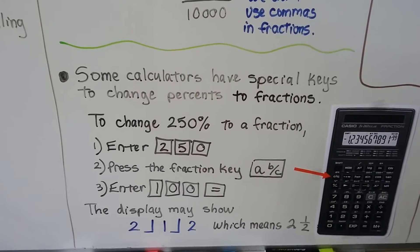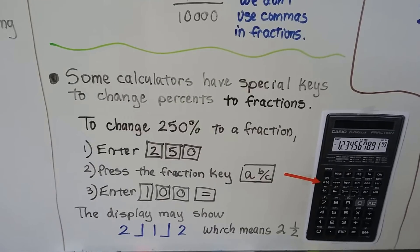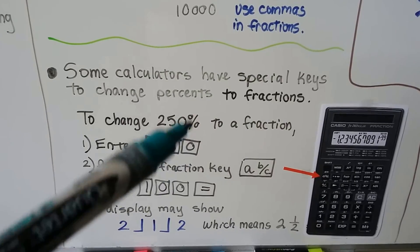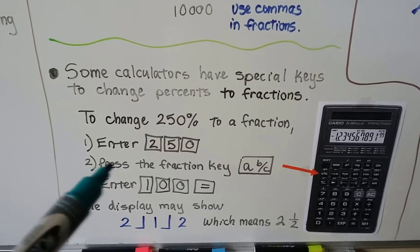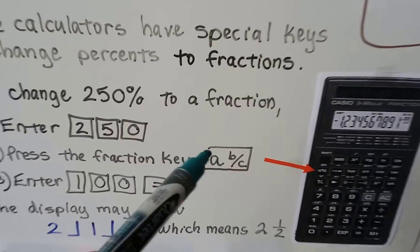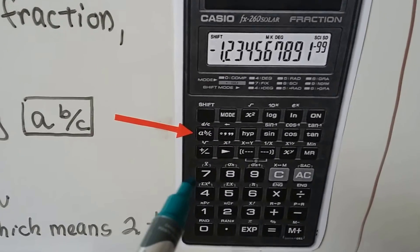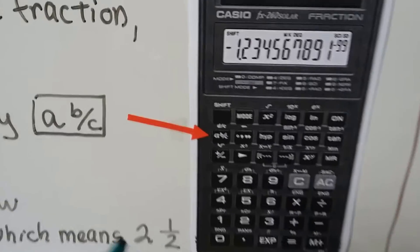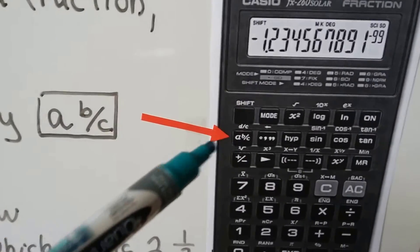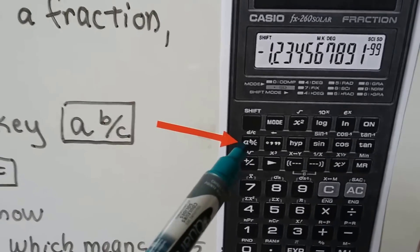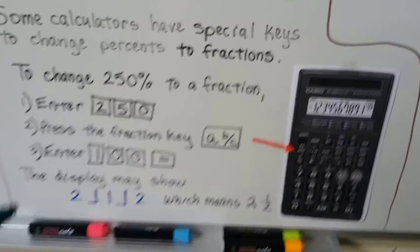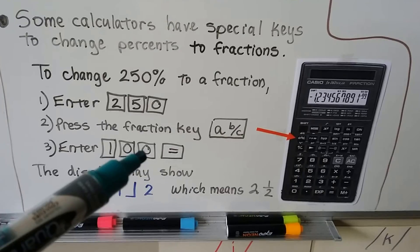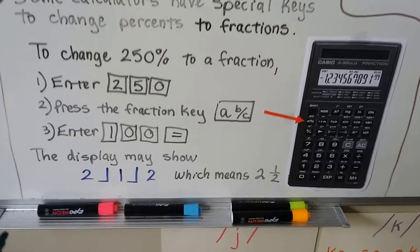Now some calculators have special keys to change percents to fractions. To change 250 percent to a fraction, we would enter the 2, the 5, the 0, ignore the percentage sign, and we press the fraction key. It's an A with a little B slash C. On the Casio FX260 that you're going to be using, it's right here, the one that they lend you for the test. If you look, you'll see the shift key, and then you'll see it right here. It's an A with a B slash C. So you can push that. After you enter the 250, you push that key, then enter 100 and the equal sign.